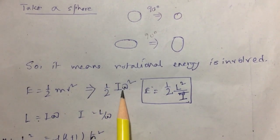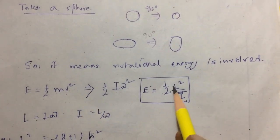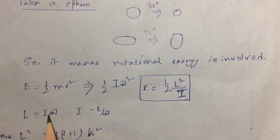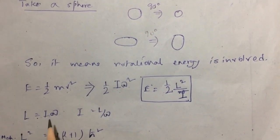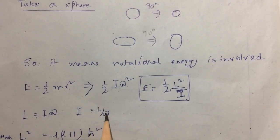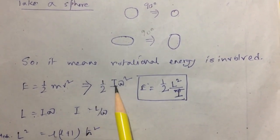This is the analogy from translation to rotational motion. And if we just substitute the value of L equal to I omega, I is equal to L by omega, and I have substituted the value of I here.